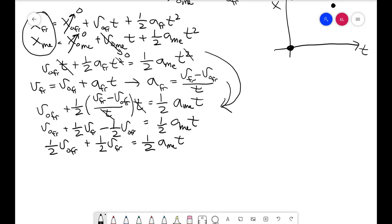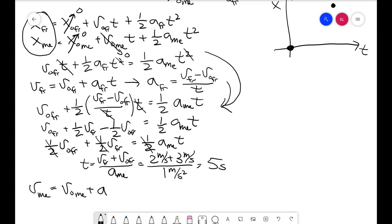I'm going to solve for the time. I'll multiply through by two and I get that the time equals V for my friend plus their initial velocity divided by my acceleration. That's 2 m/s plus 3 m/s divided by 1 m/s², which is 5 seconds. Now I'm going to use a final kinematic equation: the final velocity for me equals my initial velocity plus my acceleration times time. I start from rest, so that's 1 m/s² times 5 seconds, which is 5 m/s. That's the answer.